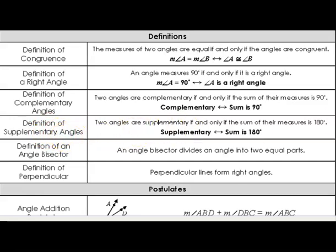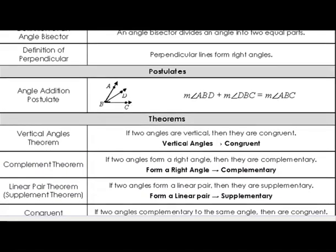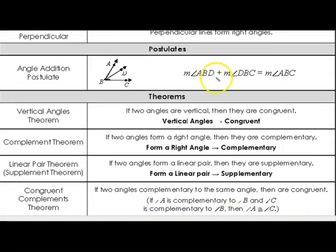The same is true for the definition of supplementary angles — two angles added together to equal 180 degrees are supplementary. Then we have the supplementary theorem, also known as the linear pair theorem. The definition of an angle bisector: an angle bisector divides an angle into two equal, congruent parts. Perpendicular lines form right angles. Just like we had a segment addition postulate, now we have an angle addition postulate — two small angles added together equal the bigger outside angle. ABD added to DBC is equal to the whole outside angle ABC.